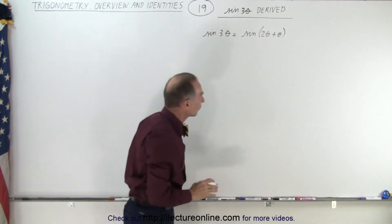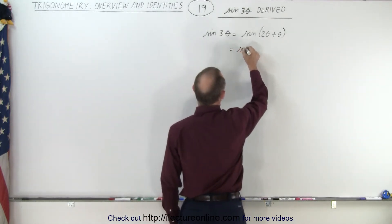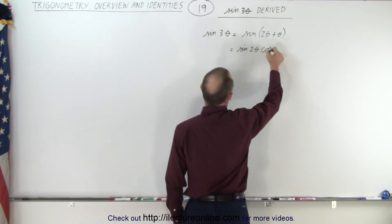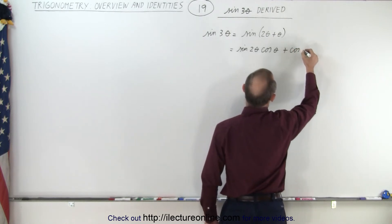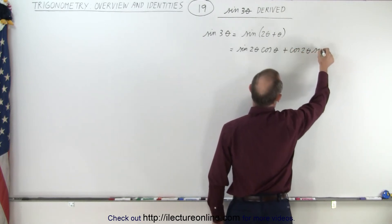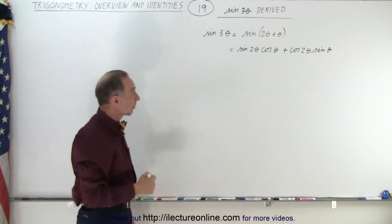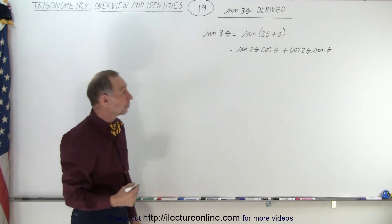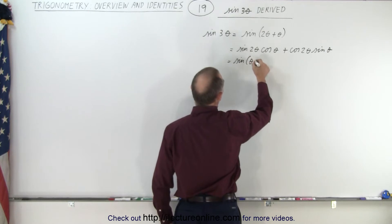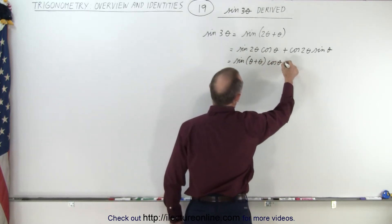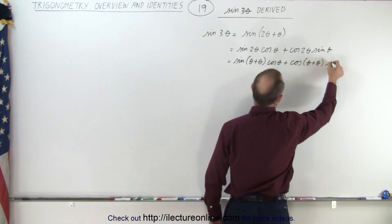So now we write it as the sum of two angles, and we know the identity for that. That is equal to the sine of 2 theta times the cosine of theta, plus the cosine of 2 theta times the sine of theta.